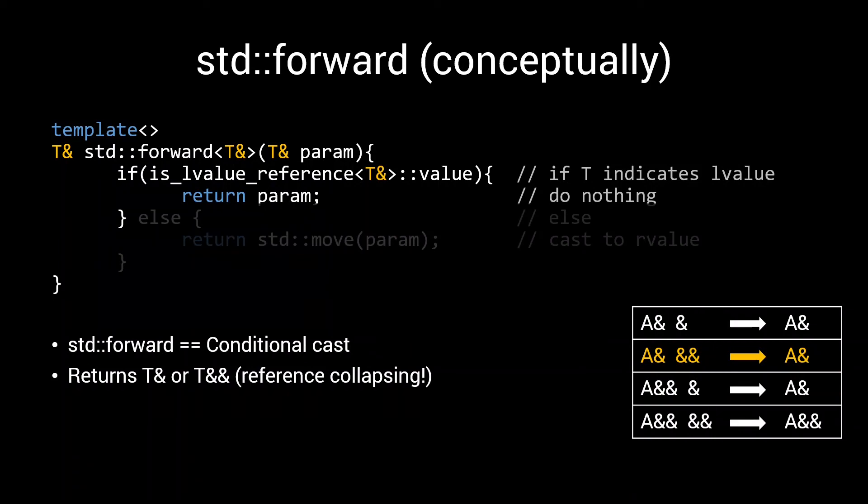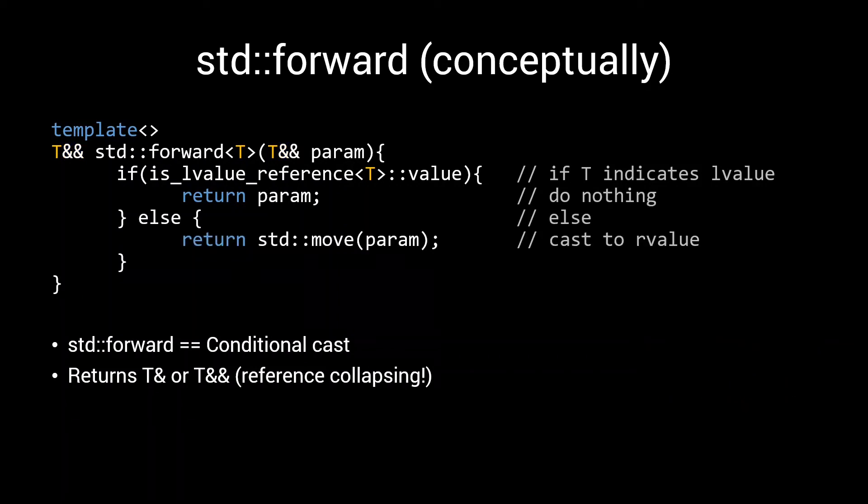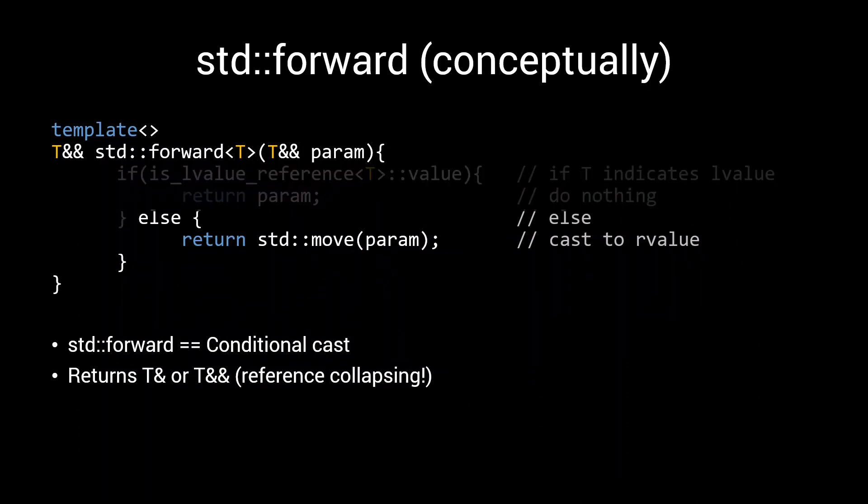If, on the other hand, we call std::forward with a template parameter a value, which, remember, is what is deduced when calling forwarding reference with an r-value, then we get this signature. We accept our input as an r-value, the else case is triggered, and we use std::move to cast from to an r-value and return it as an r-value reference.